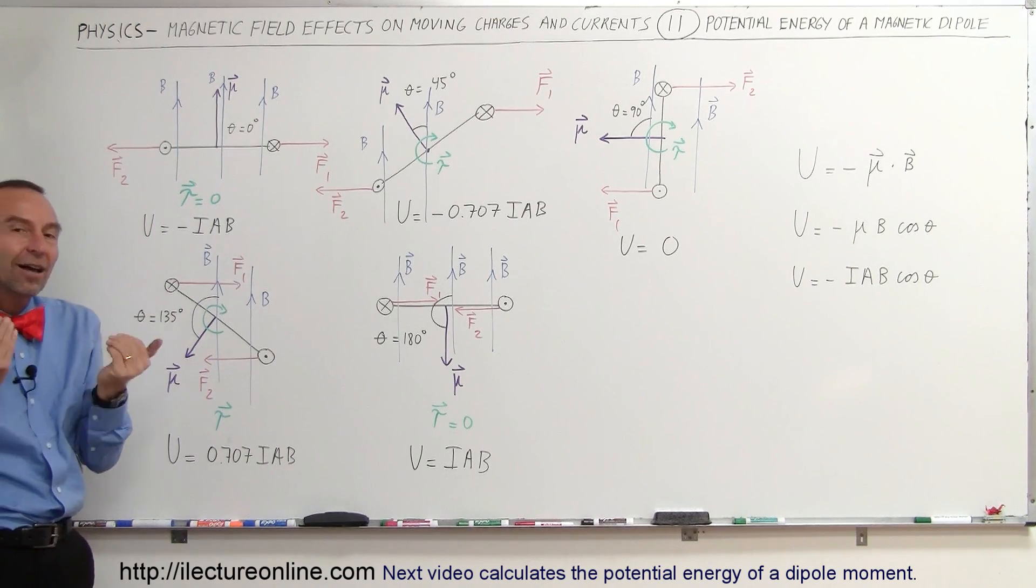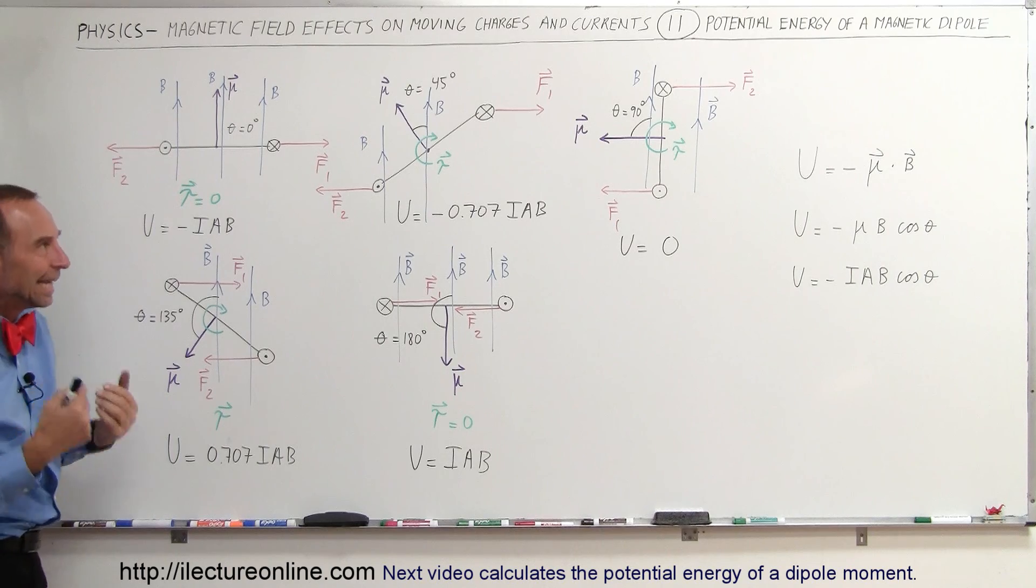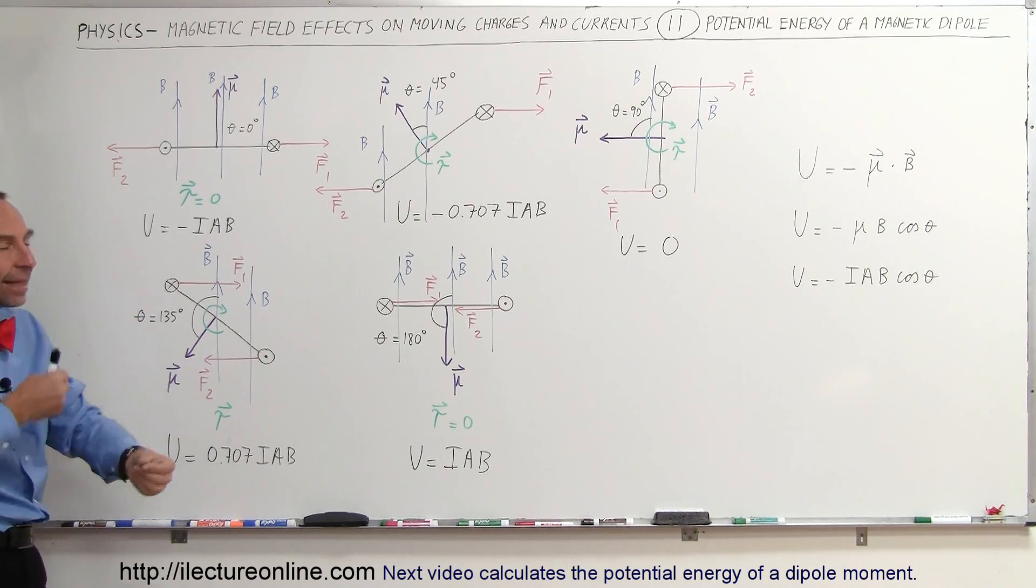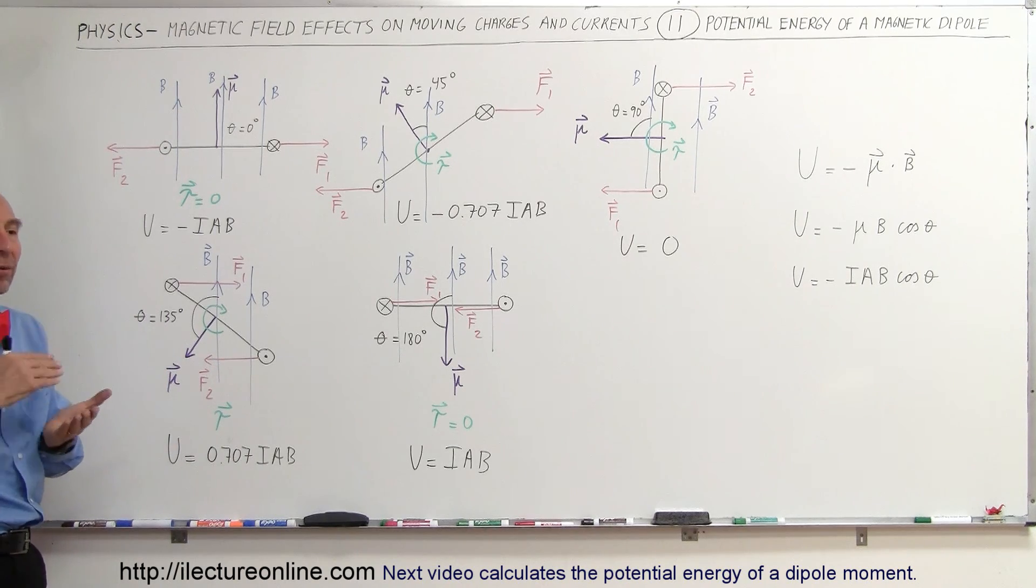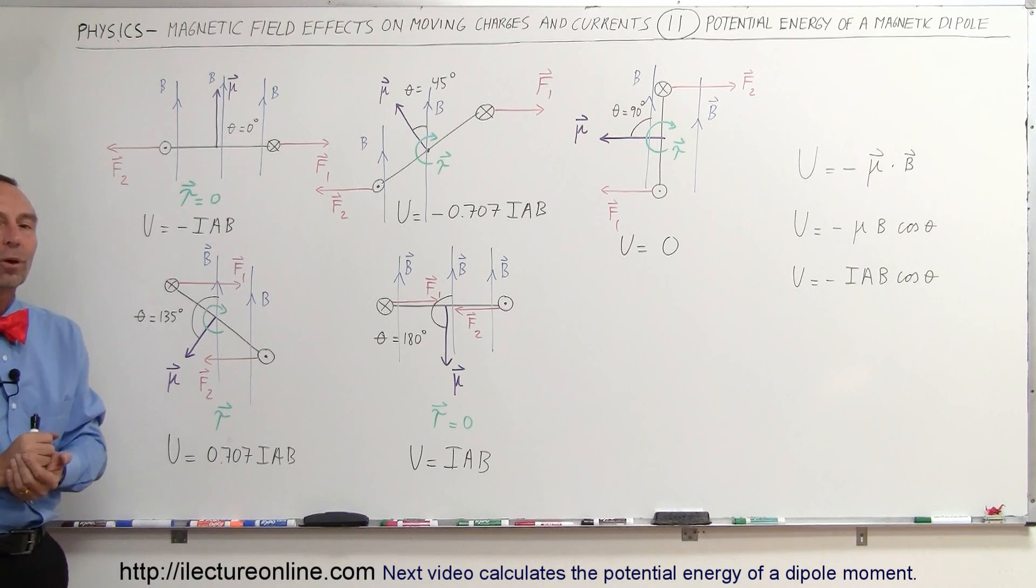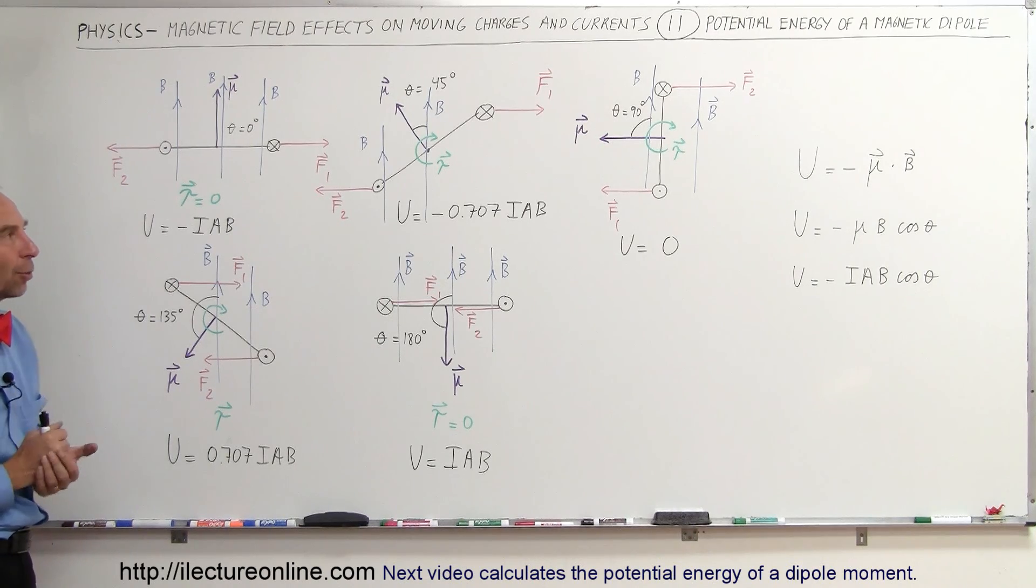So hopefully that clears out the concept of the energy stored in a magnetic dipole, and in the next video I can actually show you how we calculate that value, how we can figure out how much energy it takes to work our way through a half a loop, a half a turn in a magnetic dipole like this.